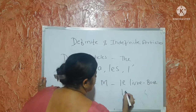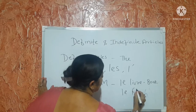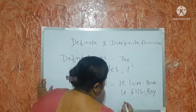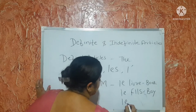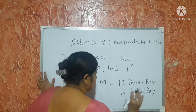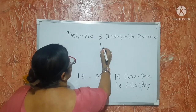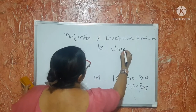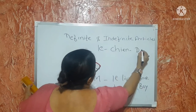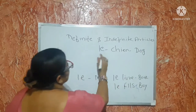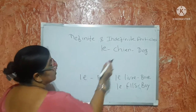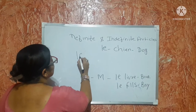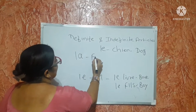La is used with singular and feminine nouns. For example, 'la chienne' — chienne means dog. When we write in English 'the dog', in French we write 'la chienne'.